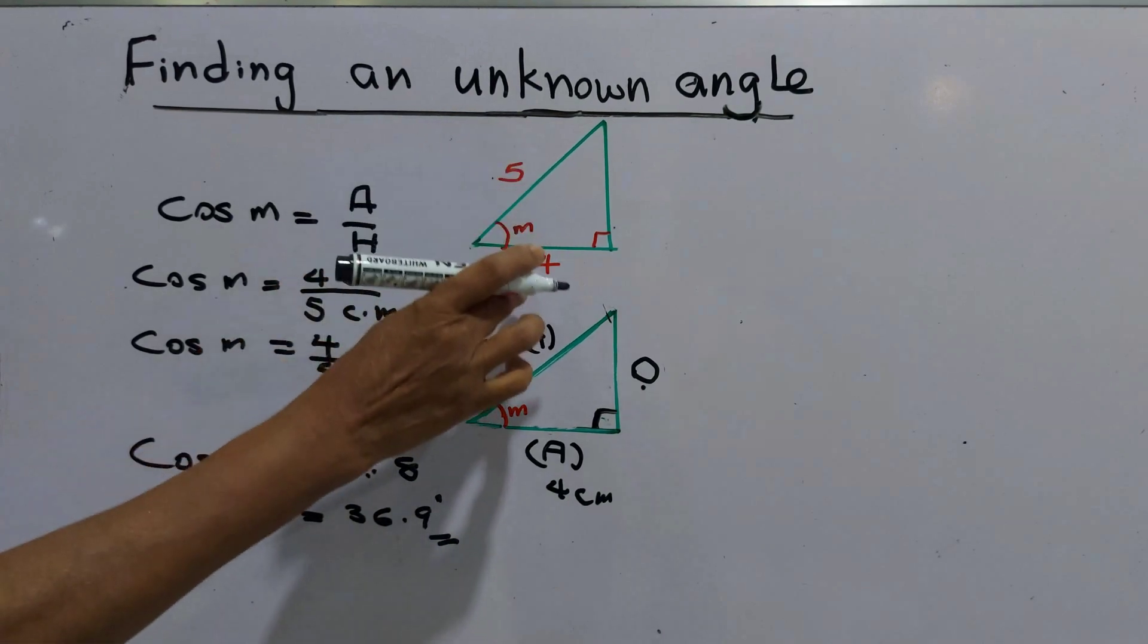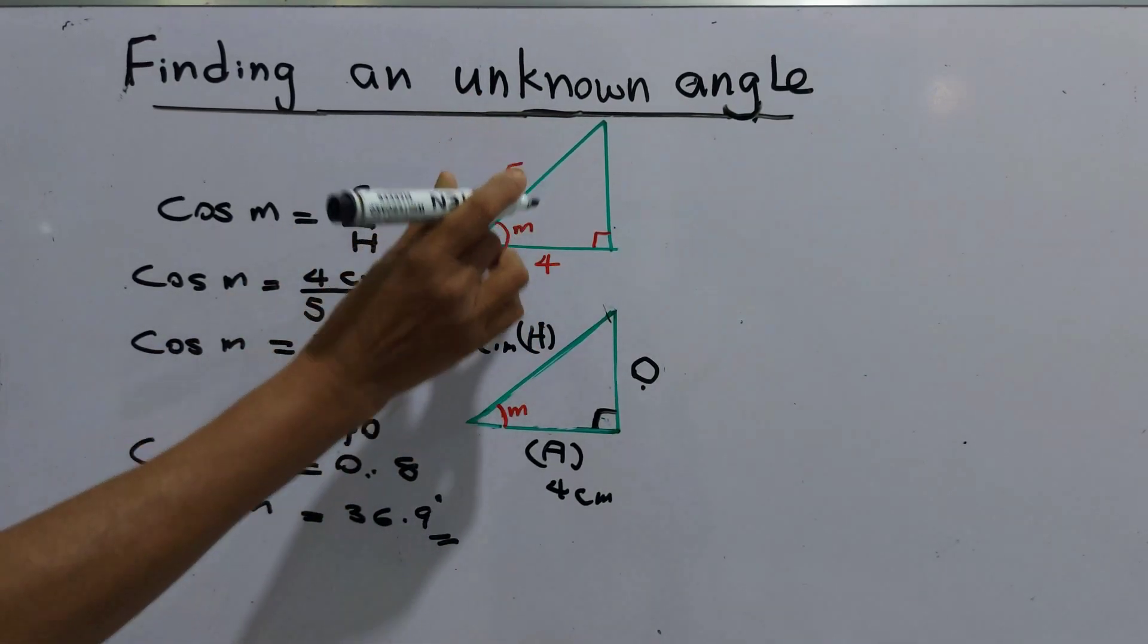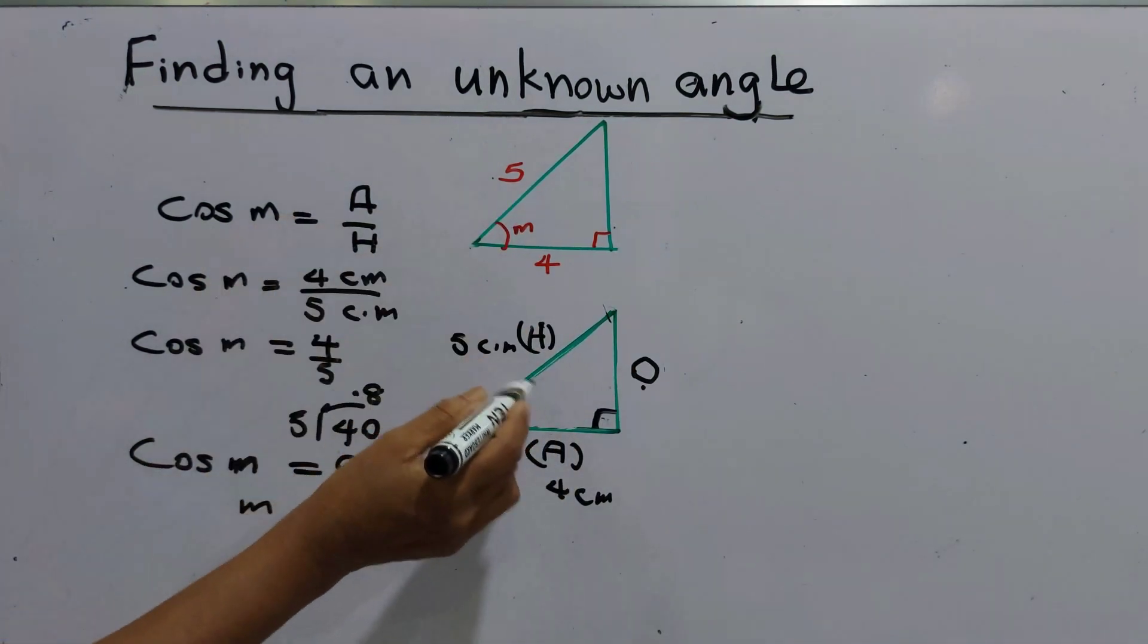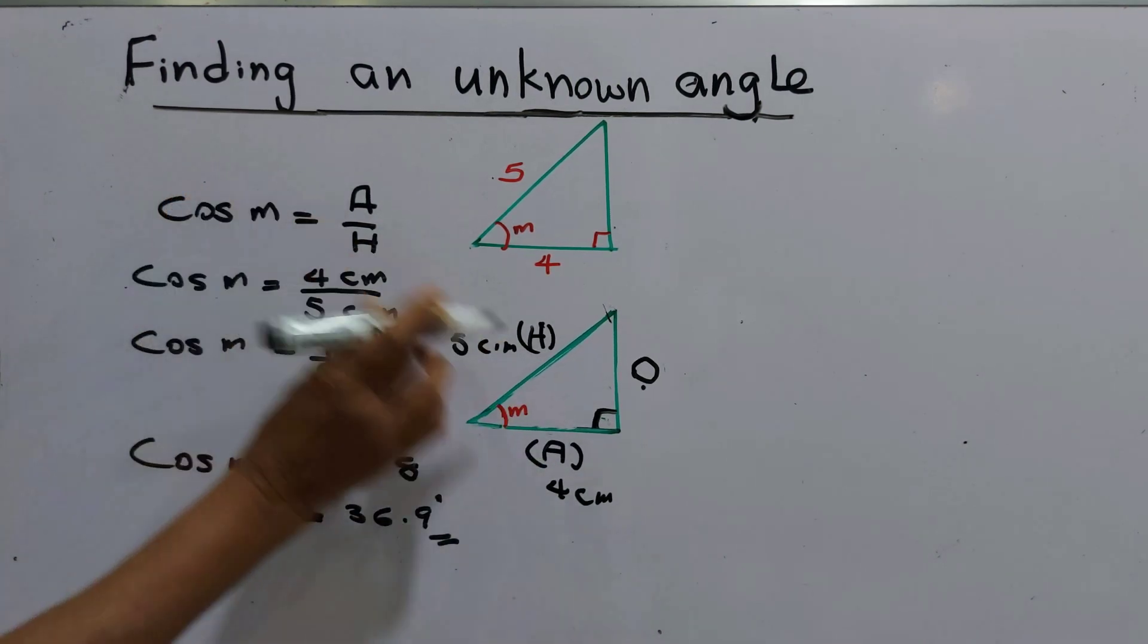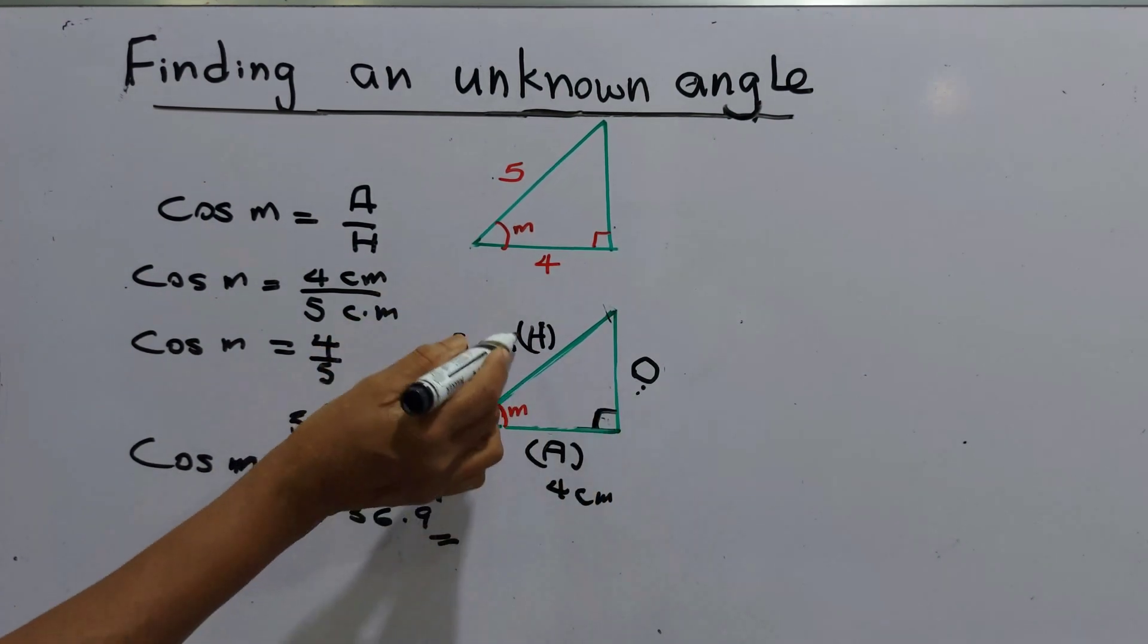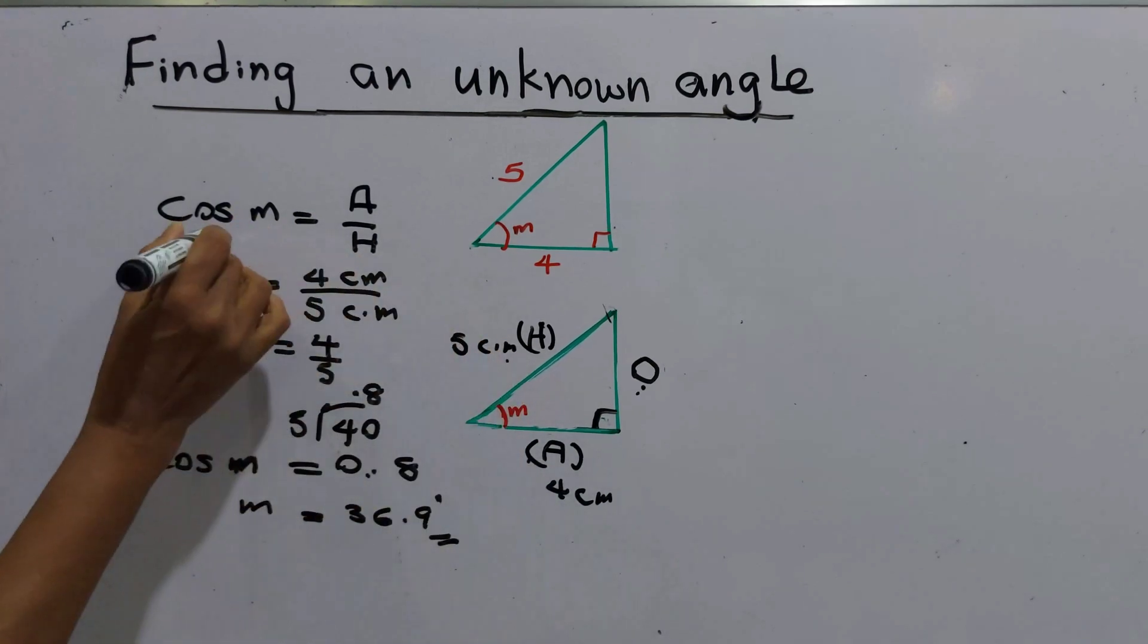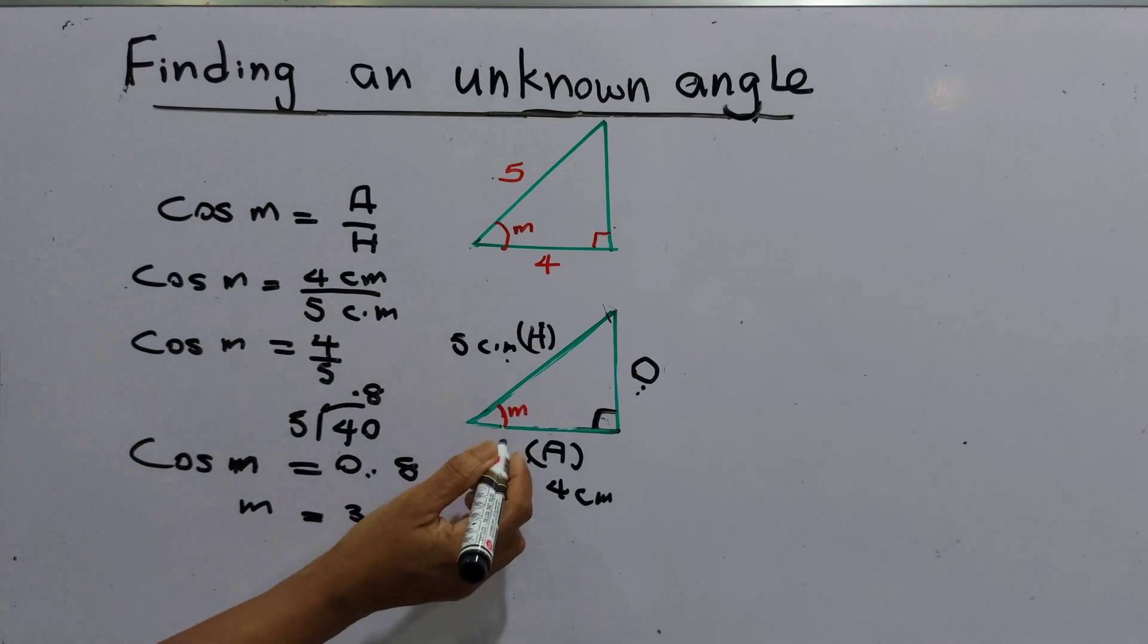First step is when you get a sum like this, first step is you have to label the sides. Then you have to find the connection, that is sine, tangent or cosine. In this example we do not know about opposite side. Then the connection is with adjacent and hypotenuse. Then it comes with cosine. This is the value of angle. Thank you.